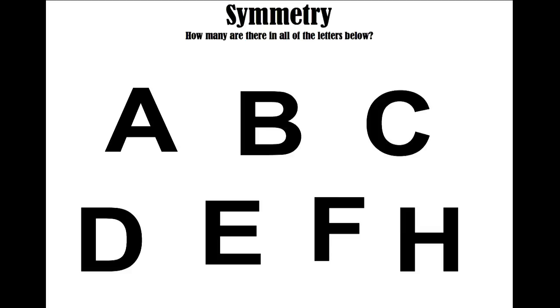In the letter A, if I folded right down the middle and folded it over, both halves would match. B has a line of symmetry, but instead of being vertical, it's a horizontal line down the middle.